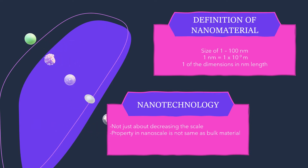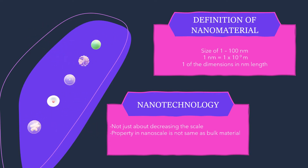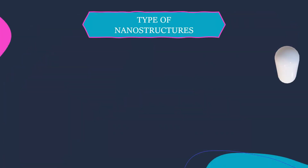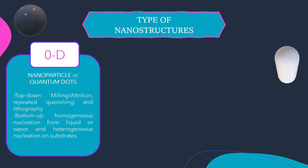But materials in the nanometer scale have completely different physical properties from the bulk material. The first type of nanostructure is the 0D nanostructure — zero-dimensional nanostructures, also known as nanoparticles and quantum dots. Both top-down and bottom-up techniques can be used to synthesize nanoparticles.